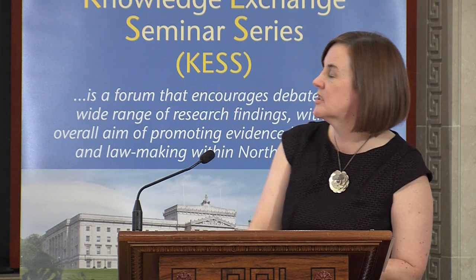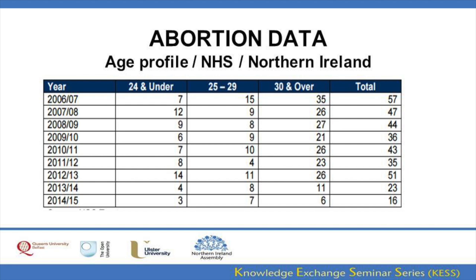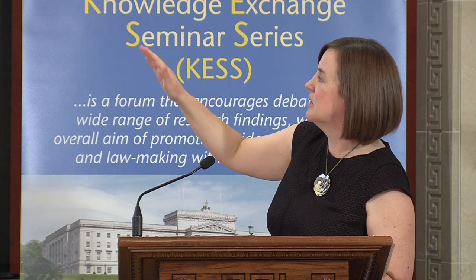Looking at the limited data we have on NHS abortions, the low numbers make it difficult to look at trends over time. This table shows data released by the Department of Health — the most recent figures — tracking legal abortions from 2006 through to 2014-15. The numbers fluctuate, with the last reported period showing 16 abortions carried out on the NHS. Looking at the age profile, most of those carried out were on individuals aged 30 and over.